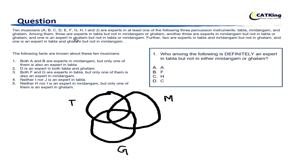Three are experts in Tabla but not in Mridangam or Ghatam — so here there are three. Similarly, another three are experts in Mridangam but not in Tabla or Ghatam — so here also three. One is an expert in Ghatam only — so here there is one. Two are experts in Tabla and Mridangam but not Ghatam — so this is two. One is expert in Tabla and Ghatam but not Mridangam — so here one. In total there are ten musicians: three plus three is six, six plus two is eight, eight plus two is ten. So we have filled all ten, meaning the remaining intersections are zero.